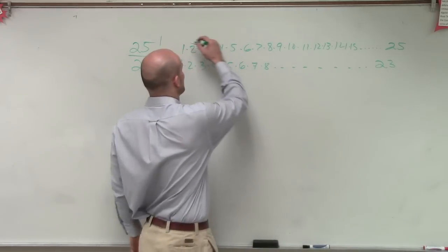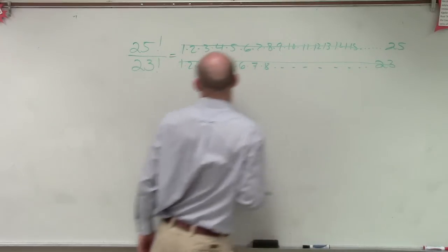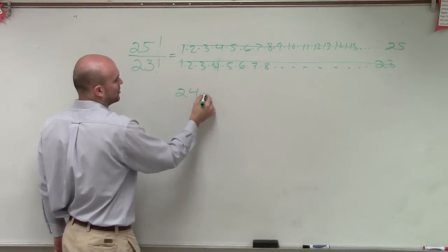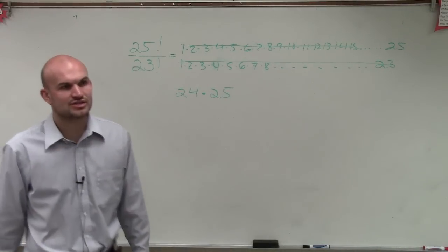So really, I can just say this all cancels, all divides out to 1, and really what I'm just left with is my last two terms. 24 times 25, which is 600, right?